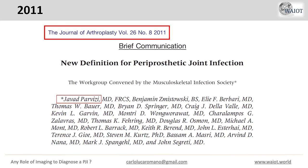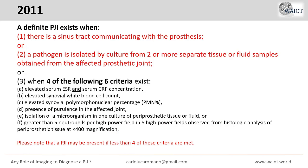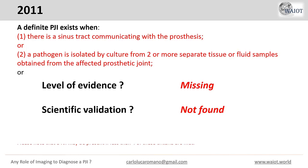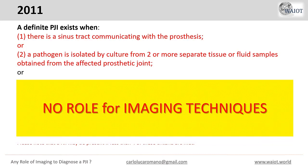Ten years ago, the definition of periprosthetic joint infection was first introduced by the Musculoskeletal Infection Society, chaired by Jay Parvizi from Philadelphia. This definition identifies two major criteria — the presence of a sinus tract or a pathogen isolated by cultures — and a series of minor criteria. No level of evidence or scientific validation was provided, and no role for imaging techniques was noted.